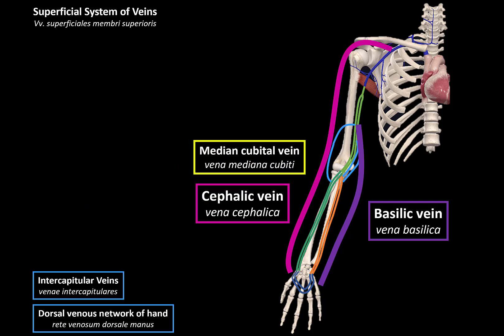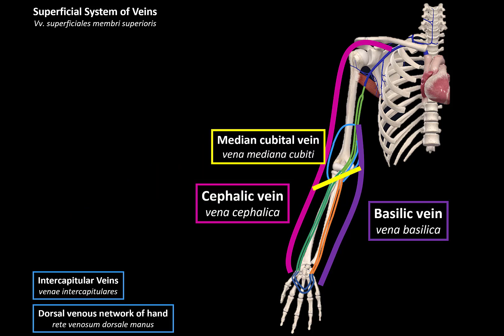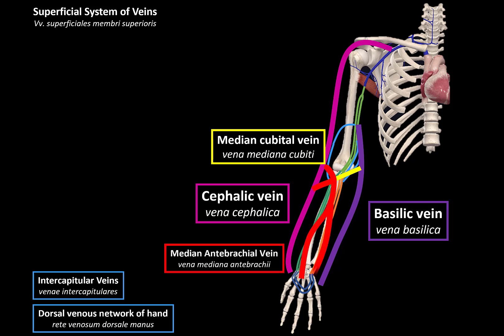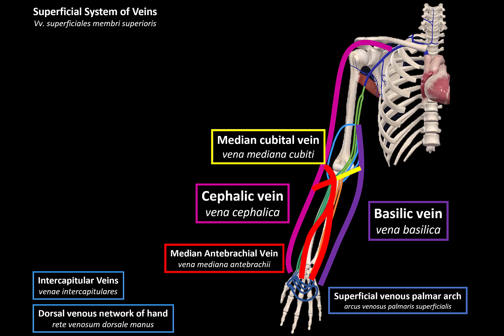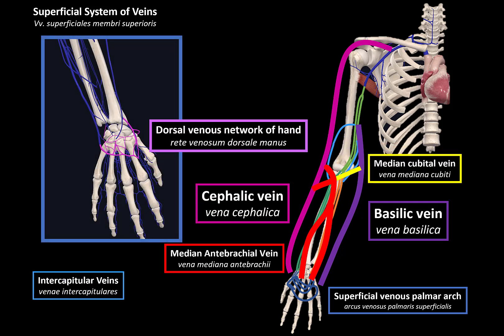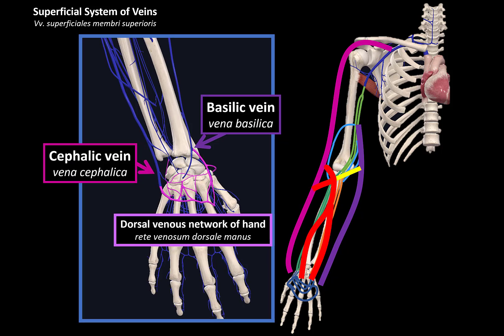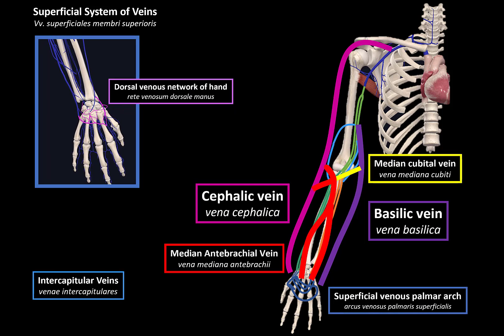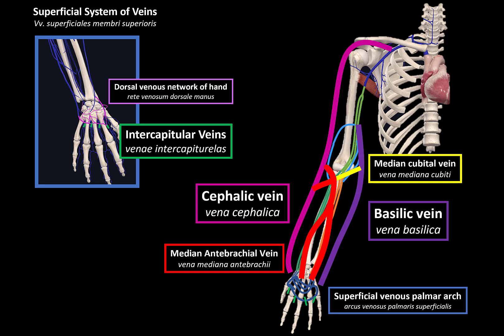Then we have the median cubital vein, which connects the cephalic vein with the basilic vein across the cubital fossa. And sometimes between the cephalic and the basilic vein, you'll find the median antebrachial vein. Then we have the superficial venous palmar arch, which lies below the palmar aponeurosis and the arterial arch, and drains into the superficial and the deep veins. Then we have the dorsal venous network of the hand, which is a venous network on the dorsum of the hand that gives rise to veins such as the cephalic vein and the basilic vein. Lastly, we have the intercapitular veins, which form connections draining venous blood from the palm to the dorsal venous network of the hand.